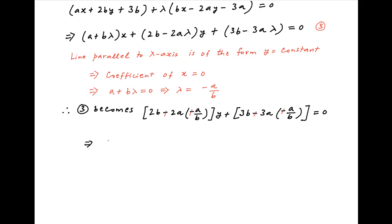This simplifies to 2 upon b times in brackets a square plus b square times y plus 3 upon b times in brackets a square plus b square is equal to 0. This can be written as a square plus b square upon b times in brackets 2y plus 3 is equal to 0.